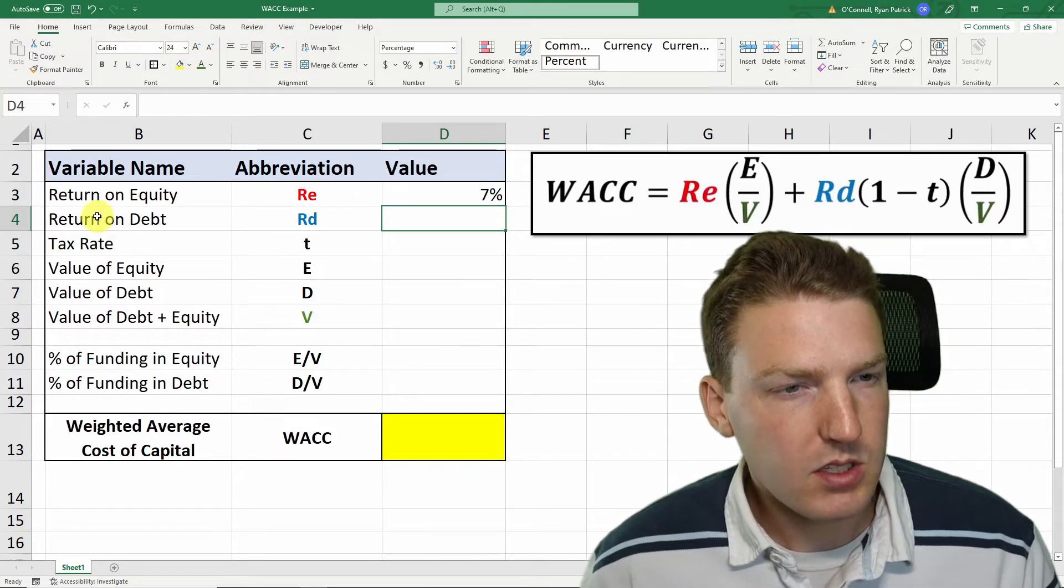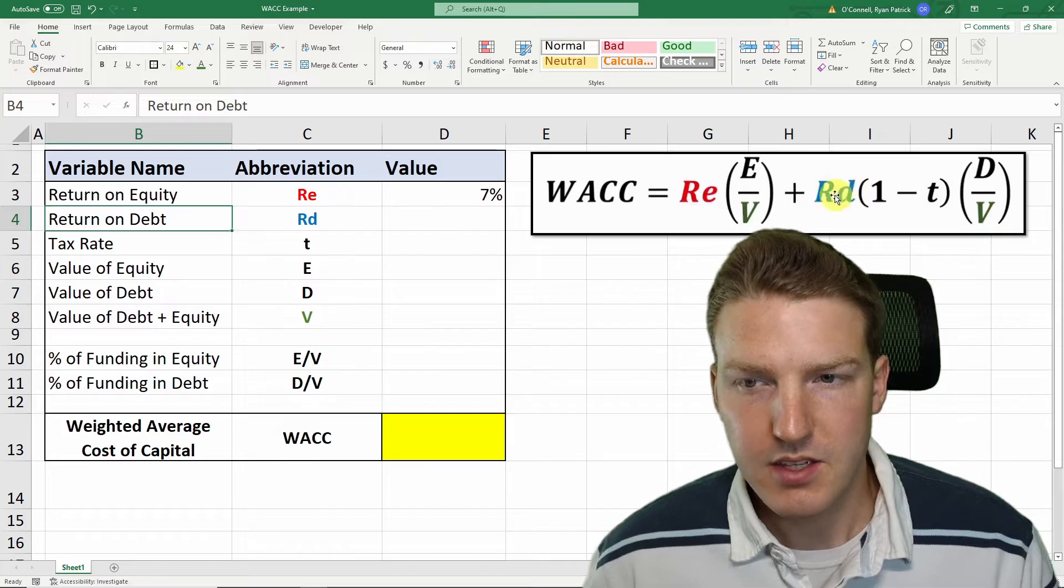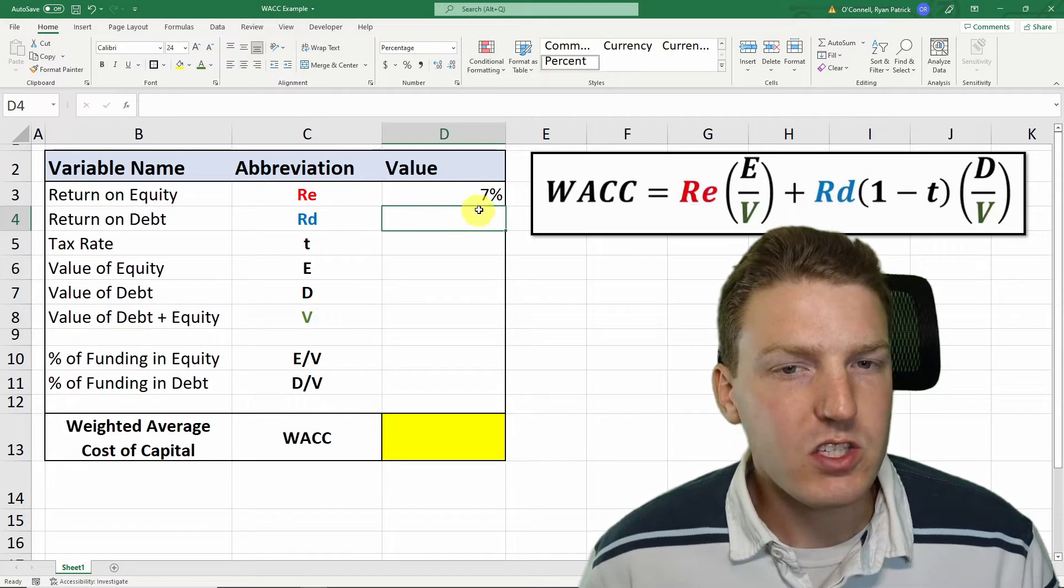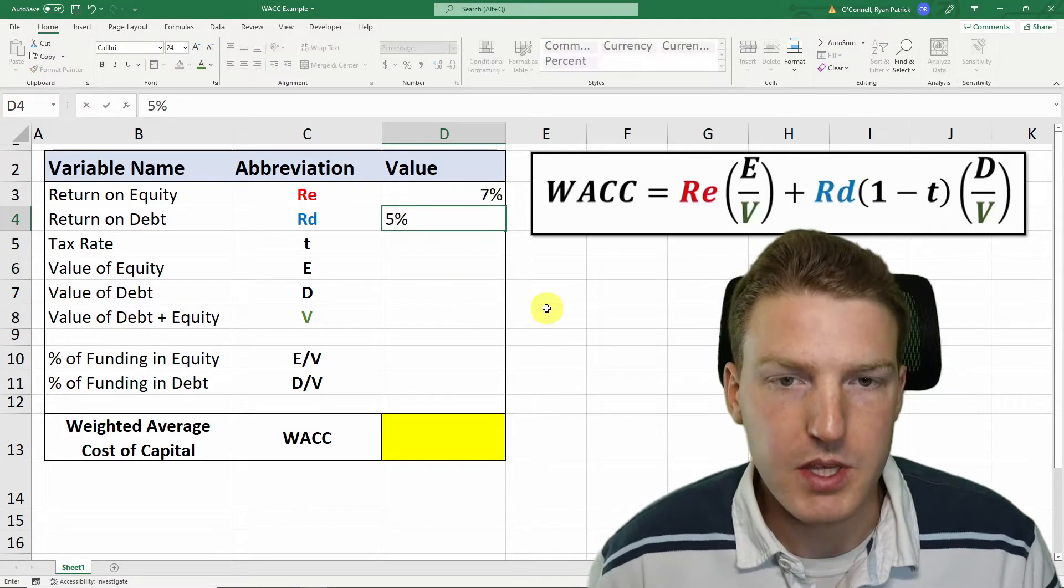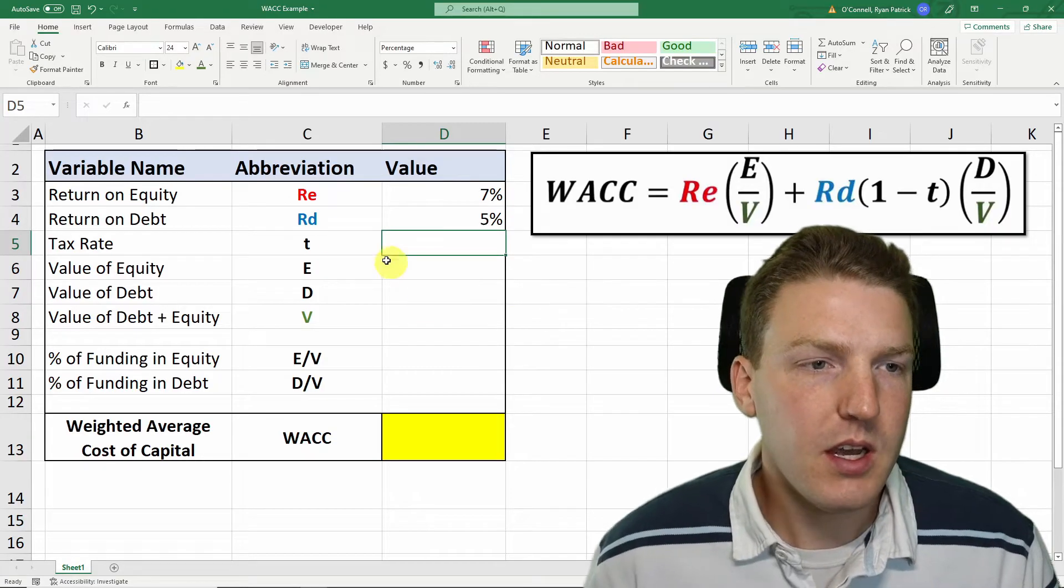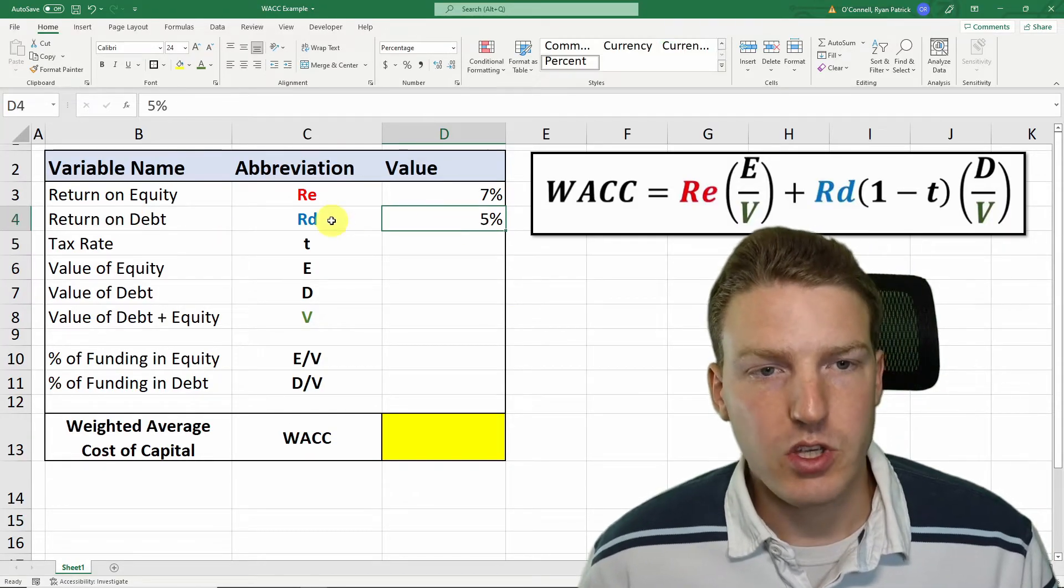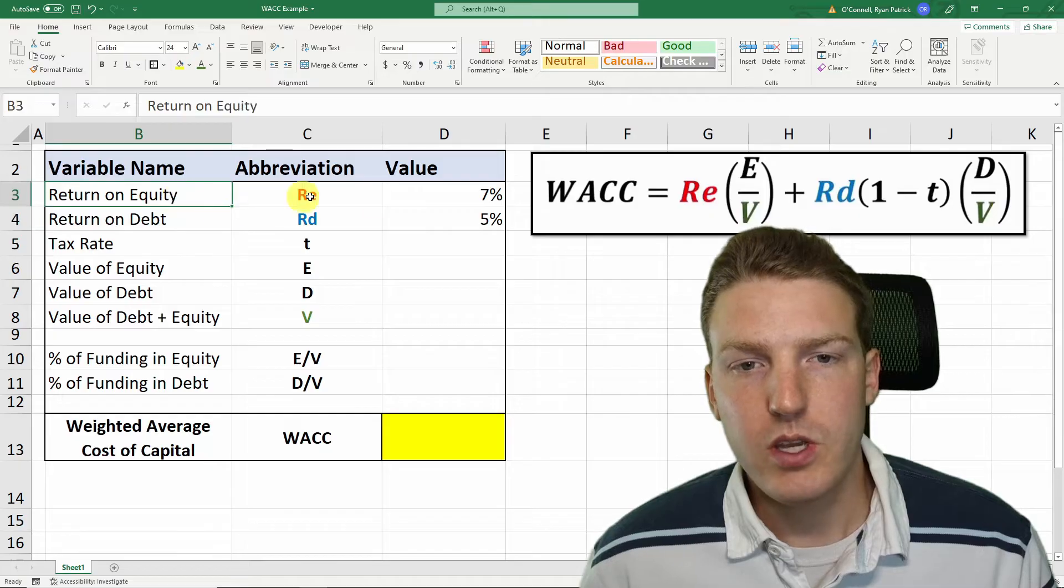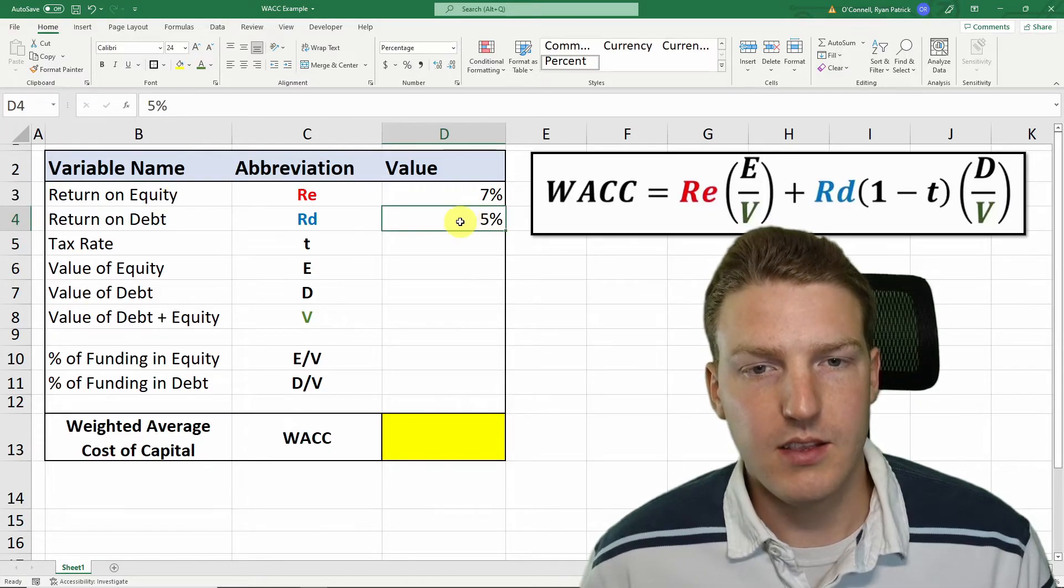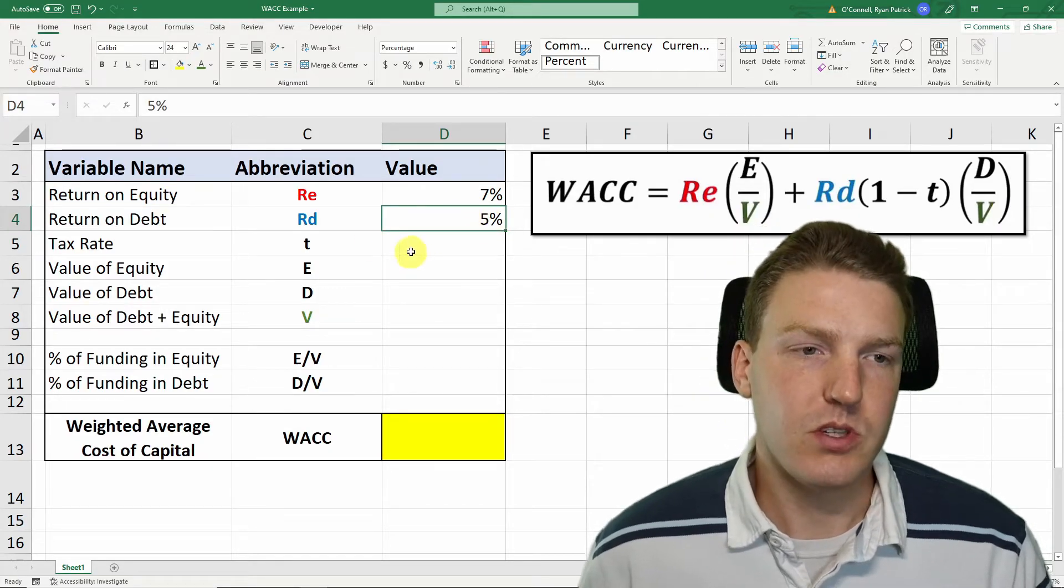Then we need to know our return on debt, this highlighted blue Rd. This should be below 7% because in the event of bankruptcy, the debtors get paid before the equity owners. So they're taking on less risk and hence get less return.